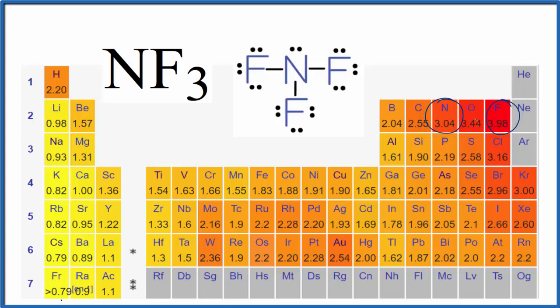Since fluorine is more electronegative, we expect that these electrons that are shared will spend more time around the fluorine. That'll make it a little more negative. The nitrogen will be a little more positive, so for that reason we do have polar bonds.